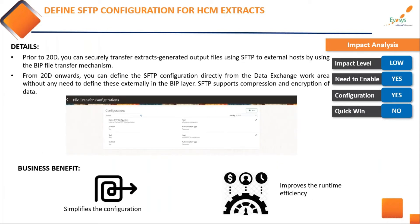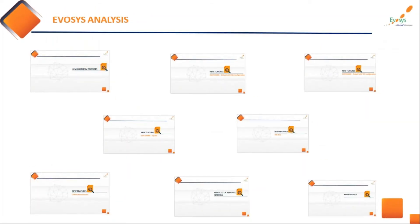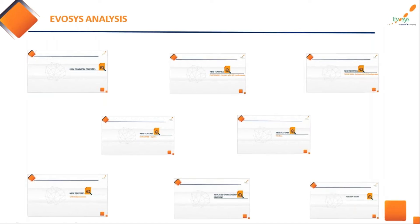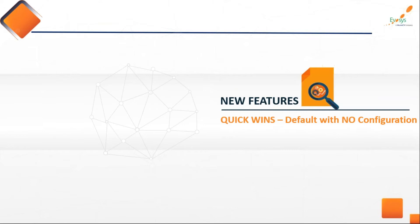An important technical update is the ability to define an SFTP configuration for HCM extracts. Before 20d, to transfer data securely using extracts you always had to connect through a BIP transfer mechanism. Going forward from 20d, you don't need the BIP architecture in between — you can directly transfer from SFTP using data exchange. This SFTP supports compression and encryption of data, which will improve your runtime efficiency.